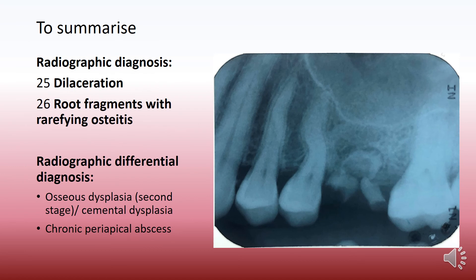To summarize the radiographic diagnosis: 2-5 is a normal tooth but has root dilaceration. 2-6 are root fragments with rarefying osteitis. The radiographic differential diagnosis would be osseous dysplasia, also called cemental dysplasia or cemento-osseous dysplasia, or simply a chronic periapical abscess.